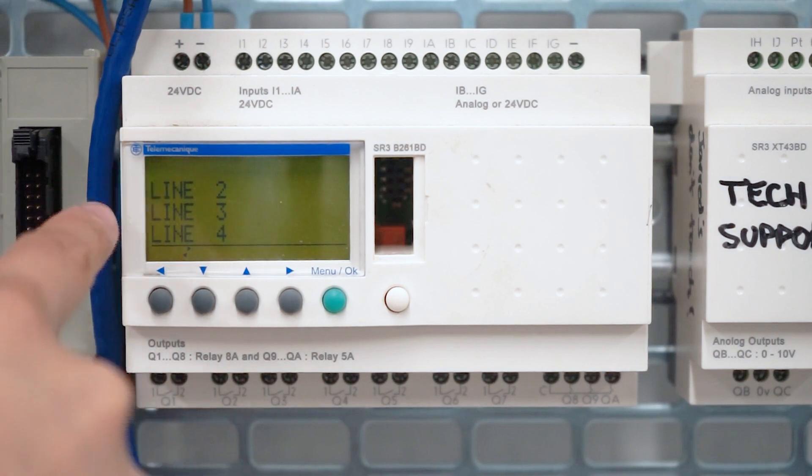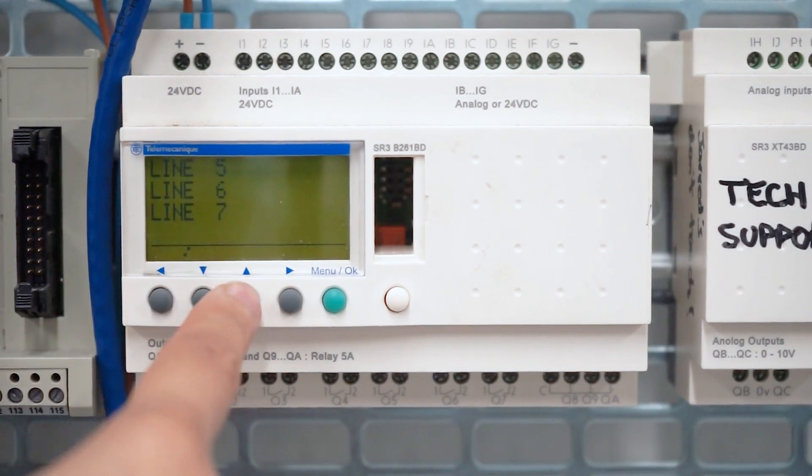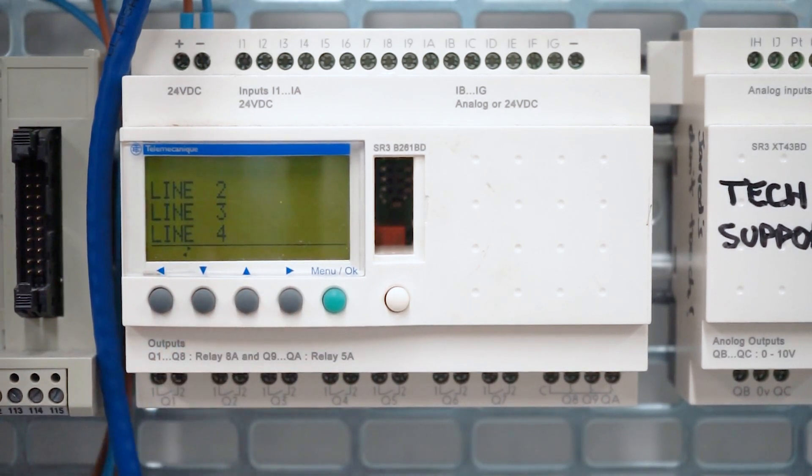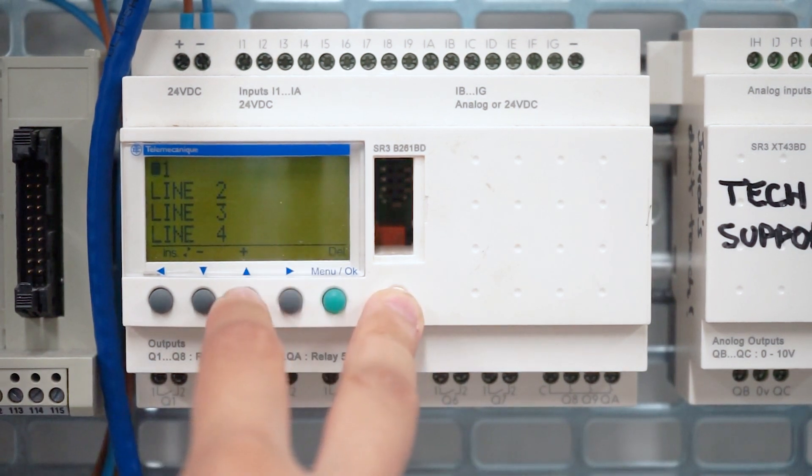We have line one at the top, line two, line three, line four, and so on. If you want to insert a contact, you press shift and you press up and you get i.